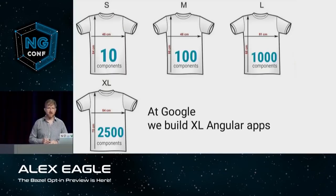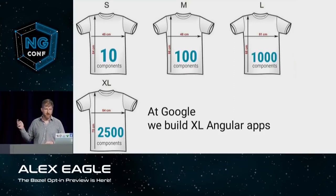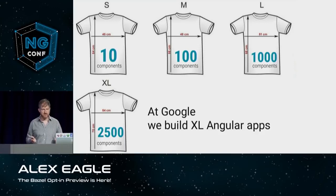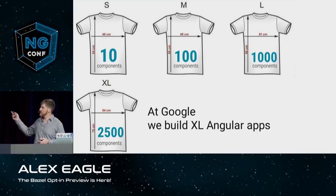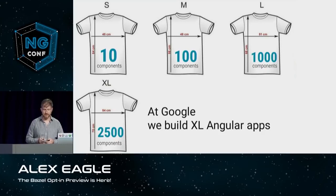For this talk, I want to give a bit of guidance about what scale we're trying to target with Bazel. A 10-component app — what I'm calling small t-shirt size — is probably a typical app you'd write in a bootcamp class, maybe like the Tour of Heroes or our new Getting Started that we just announced, all the way up to a 2,500-component app. I picked that number because that is actually the size of one of the Angular apps that we build internally at Google.